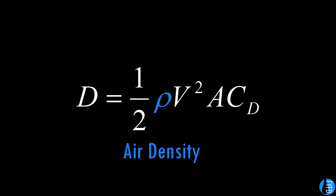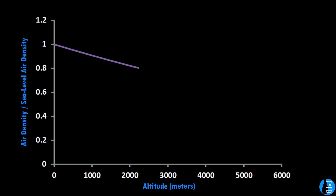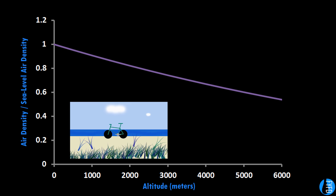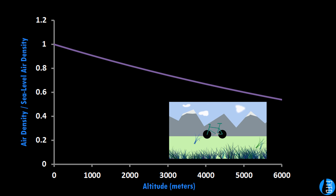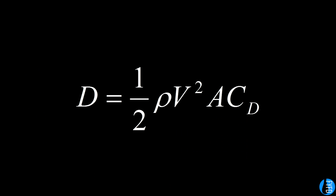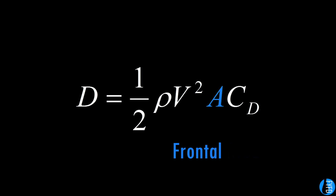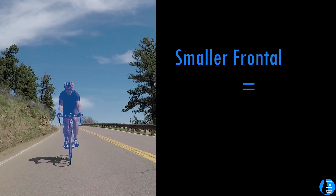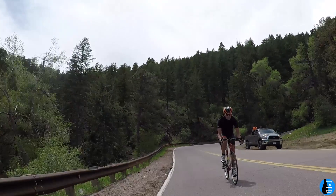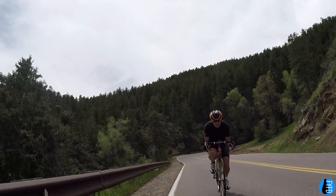The first factor is air density, represented by the Greek letter rho. The density of air decreases with altitude, so one way to experience less drag is to move from sea level to the mountains. The second factor is v, the cyclist's velocity relative to the air around them. Notice that velocity is squared — that means a cyclist going twice as fast actually experiences four times the drag. The third factor, A, is the projected frontal area of the cyclist and bike. In general, the smaller the frontal area, the lower the drag, so one way to reduce drag is to make yourself as small as possible on the bike.